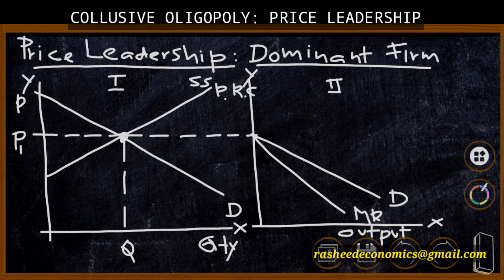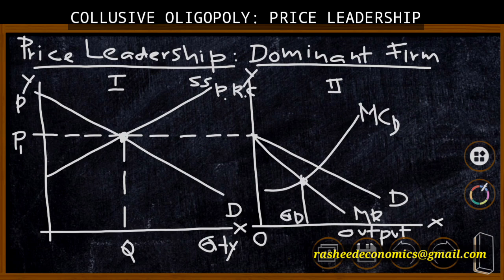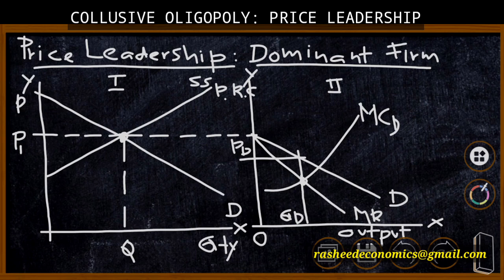To fix the equilibrium of the dominant firm, we plot its MC curve, and the equilibrium quantity is identified as OQD. The dominant firm produces OQD quantity and can sell it at price OPD. If small firms charge OP1 and the dominant firm charges OPD (which is lower), customers will shift to the dominant firm, so small firms are forced to follow the dominant firm's price strategy. Therefore the OPD price is extended to Segment 1.